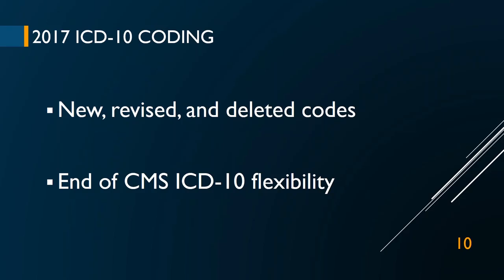I'm going to cover two things regarding October 1st. First, a quick summary of all the new, revised, and deleted codes. There are about 2,000 new codes, about 400 revised codes, and about 300 deleted codes — about 2,700 changes total. Depending on your specialty, there may be no changes that impact you at all. But if you're in a different specialty, you might have a lot to look at. It's important to be aware of that because you do not want claims delayed simply because of code selection.